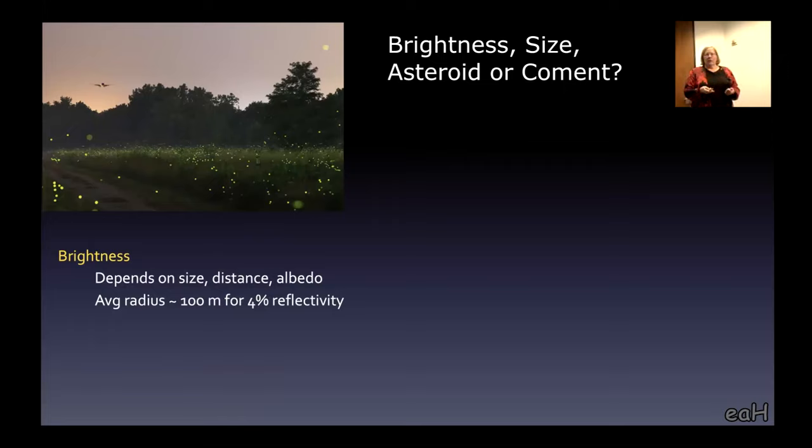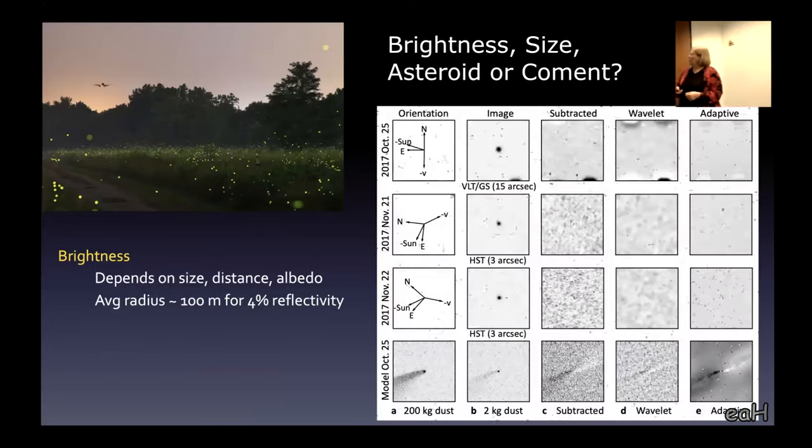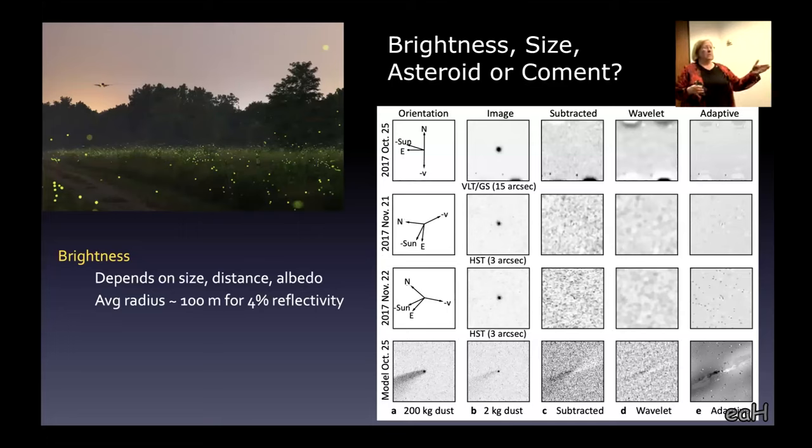Is it a comet or an asteroid? Asteroids are rocky bodies in the solar system. Comets have these big, beautiful tails. So we looked in detail. What we're seeing in the various rows are different dates when we observed with different telescopes. What you see in the second column are just dots. Just a point of light. No tail. No tail evident at all.